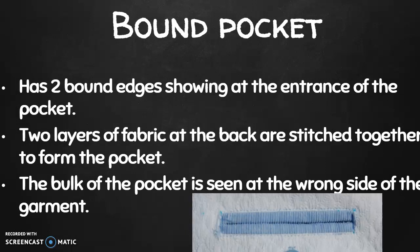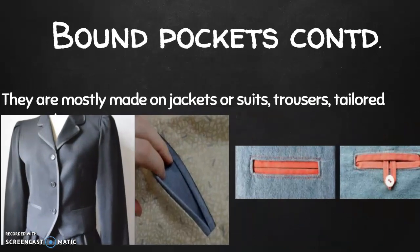Then comes the bound pocket. A bound pocket has two bound edges showing at the entrance of the pocket, and that is the only thing that is seen. Looking at the picture, it has only two bound edges showing. It can be made of the same fabric or a different type and color of fabric, as we see here. Two layers of fabric at the back are stitched together to form the pocket, and the bulk of the pocket is seen at the wrong side of the garment. They are mostly made on jackets or suits, trousers, and tailored garments. This is a lady's suit with two bound pockets — one at the left-hand side and one at the right-hand side.